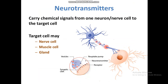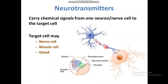Neurotransmitters are a type of signaling molecule or ligand. They carry chemical signals from one neuron or nerve cell to the target cell. The target cell may be a nerve cell, muscle cell, or gland. In neurotransmission, there is a synaptic junction or cleft present between the sensory and motor neurons. Neurotransmitters are released by vesicles, bind to receptor molecules, and the signal is transferred.